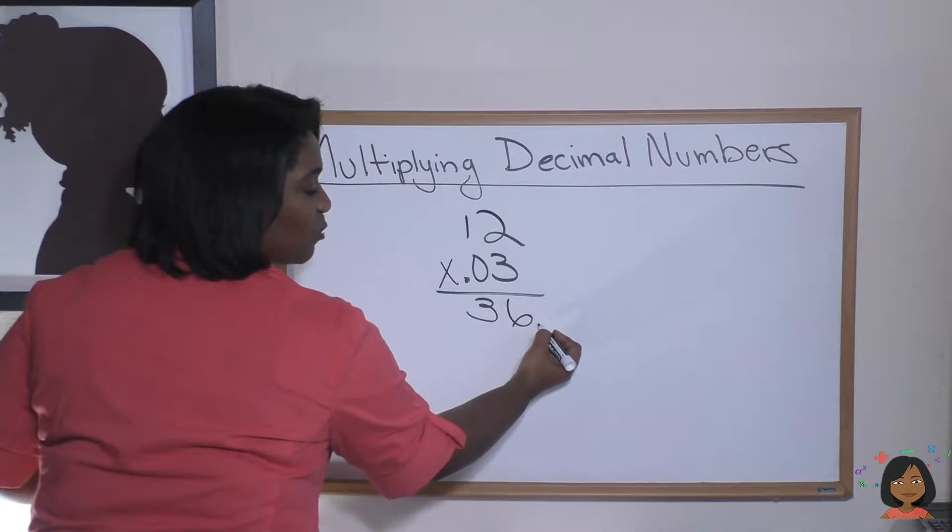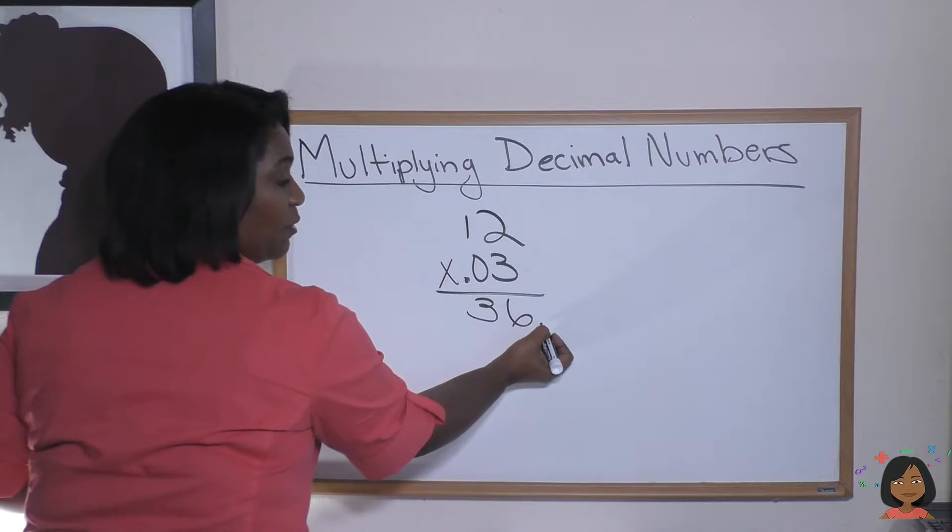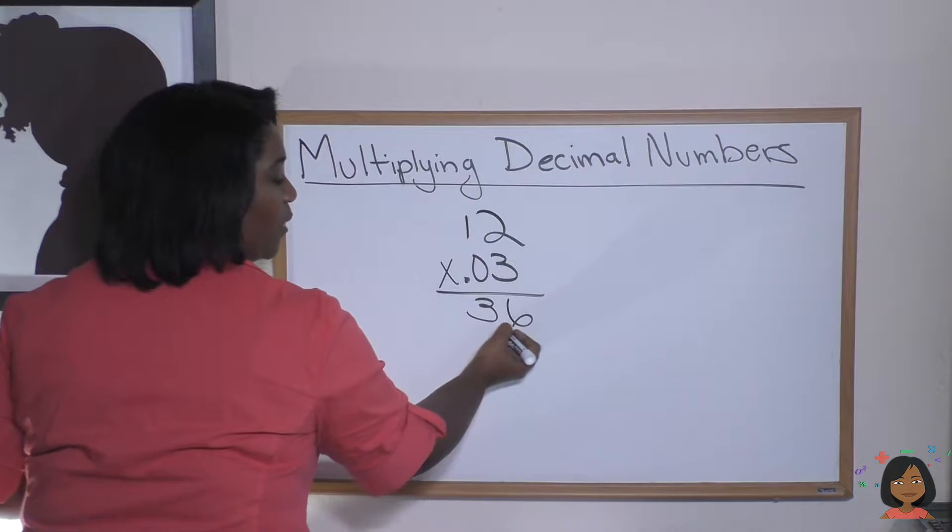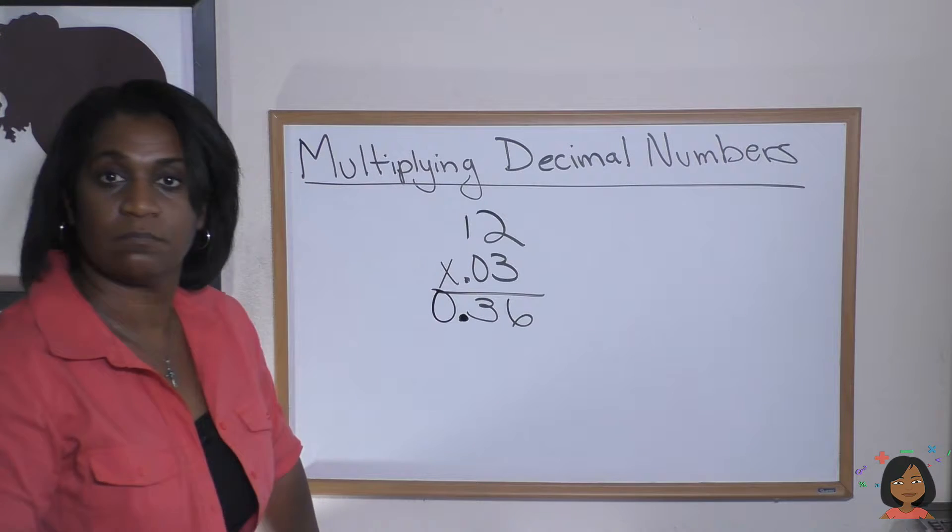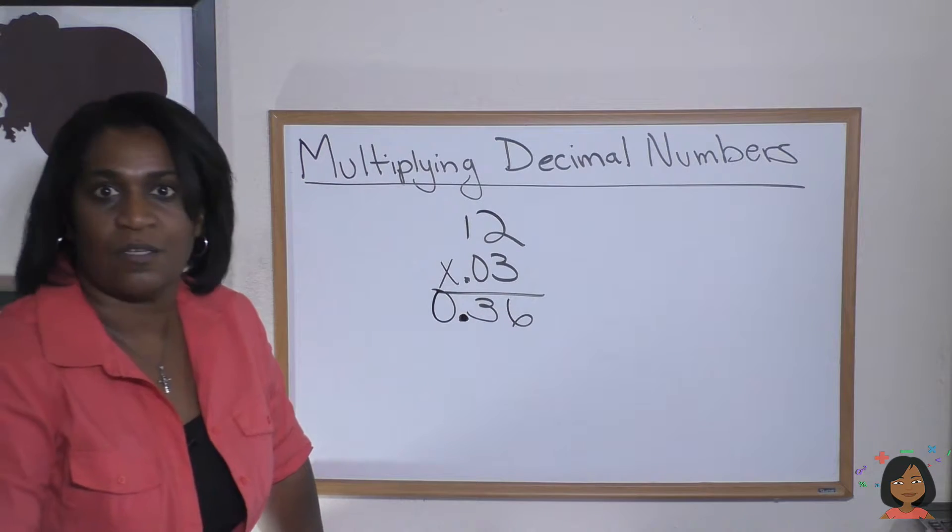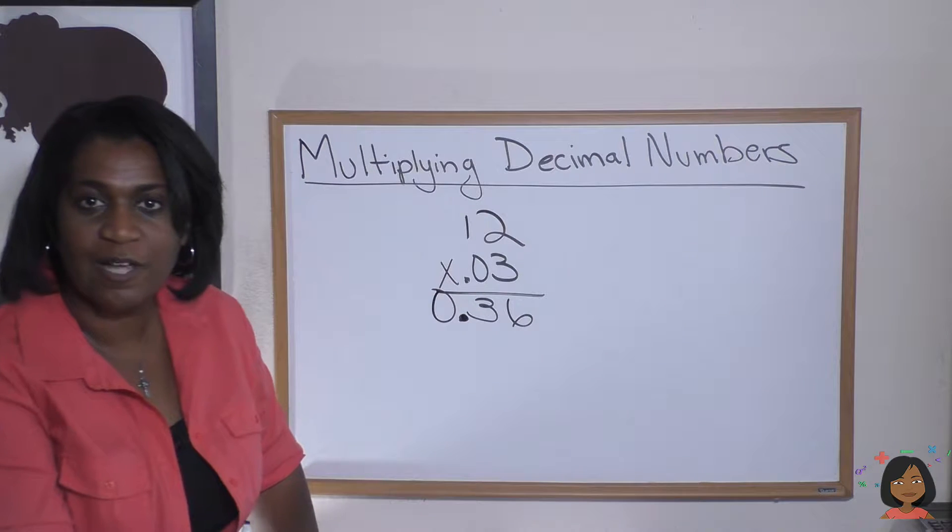So we know this decimal, usually imaginary decimal, is here, and then we move it two spaces. One, two. There's our decimal point, and we know we always put a zero in front of it. That's it. You multiply and account for your decimals.